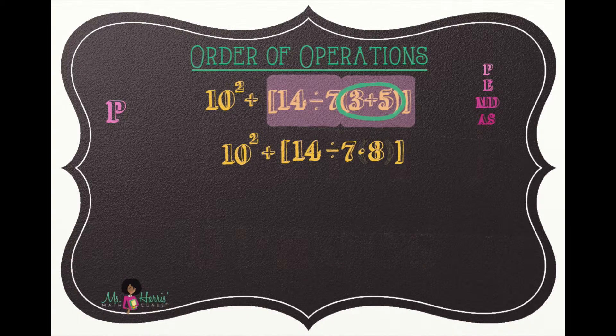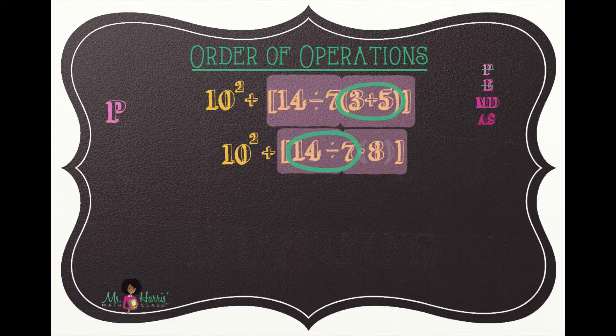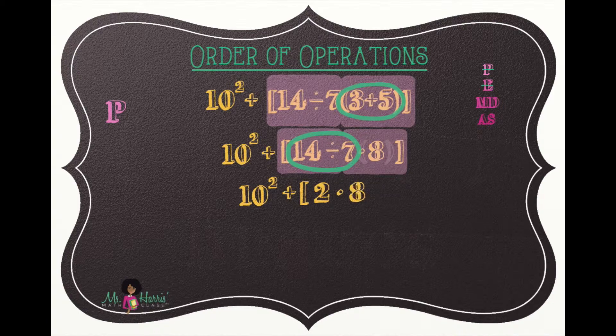Within that grouping symbol, we have multiplication and division, but we work from left to right. So we highlight 14 divided by 7, which is 2, and bring down the remaining numbers and operations.